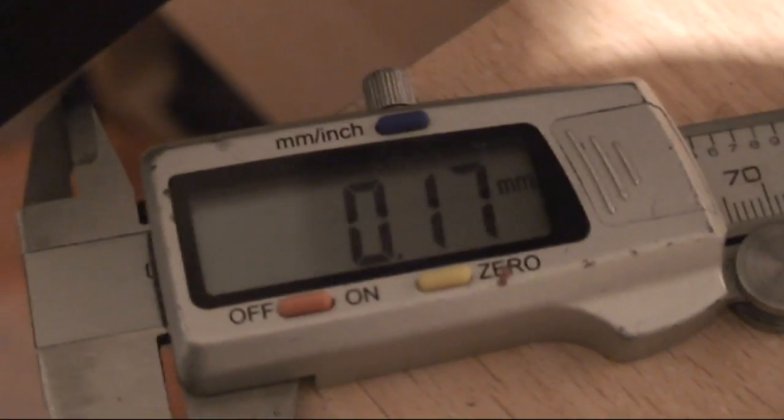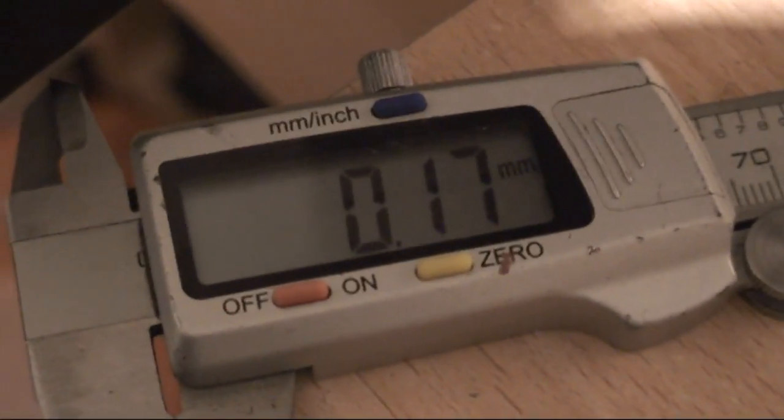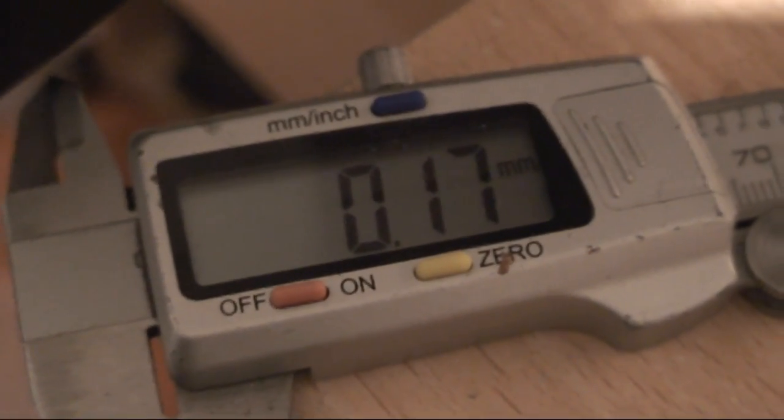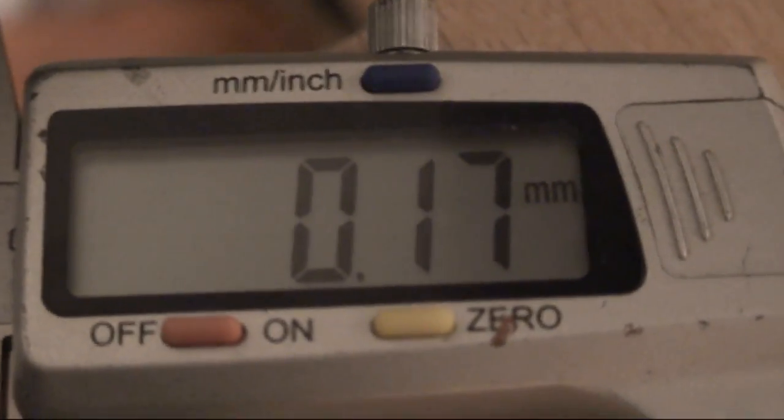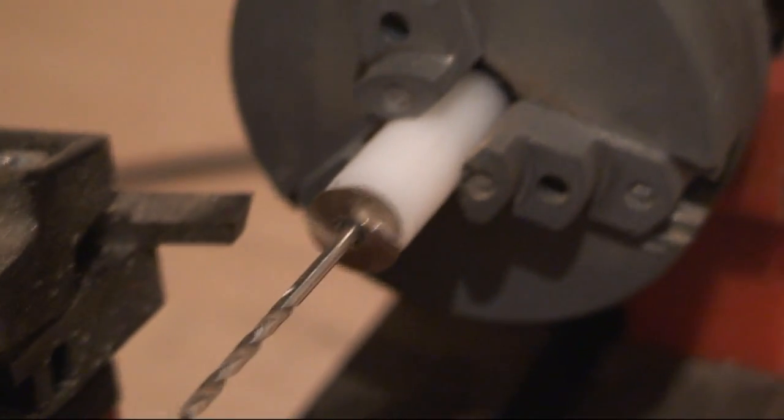And I can keep measuring it with the caliper until I'm happy. So the best thing to do is for me to measure the diameter of the actual wheel tread, zero the caliper there, and then my aim is to keep measuring the outside of the flange until I get to one millimeter. Then I know that's the correct diameter.